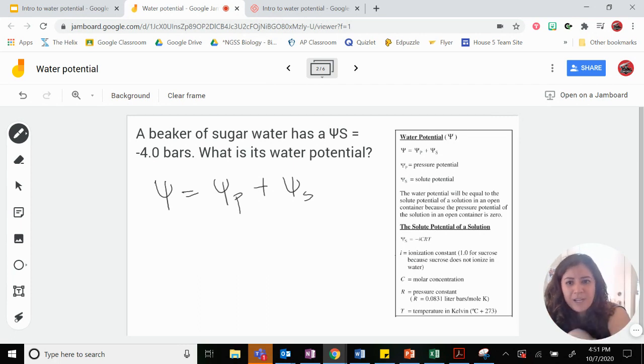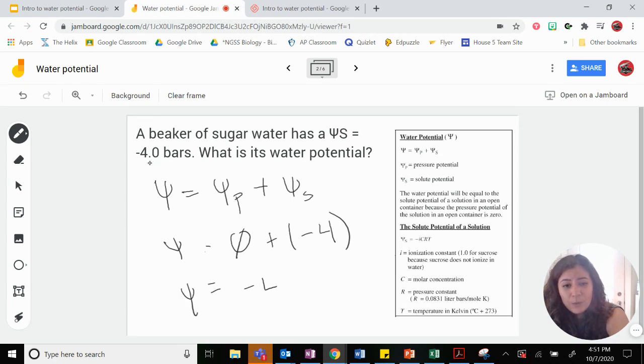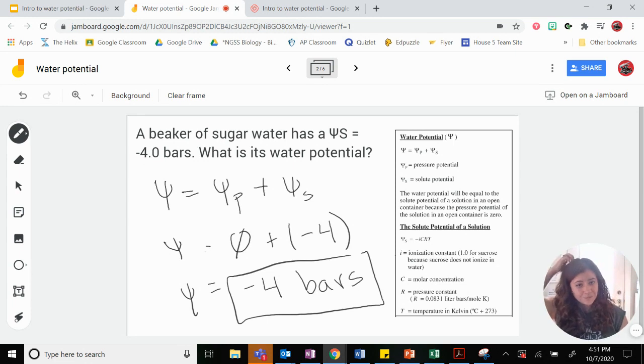Well, if it doesn't tell us, we can assume it's zero, right? So this is possibly even easier than the last one. So it's going to be zero plus negative 4. So the water potential is going to be negative 4 bars. Not so bad, right? Let's do one more.